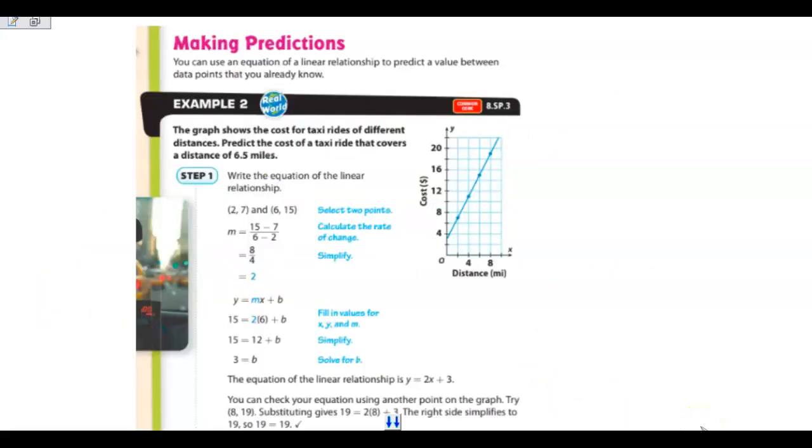We can use these to make predictions. It says the graph shows the cost of a taxi ride for different distances. You can predict the cost of a taxi ride that covers a distance of 6.5 miles. The first thing I would do would be to write an equation from this. And so I would pick two points on here that I can easily work with. And they use these two points here. 2, 7, and 6, 15. Find the slope by finding the difference of y over the difference on x. And so you get 8 over 4, which is 2. So my slope is 2.